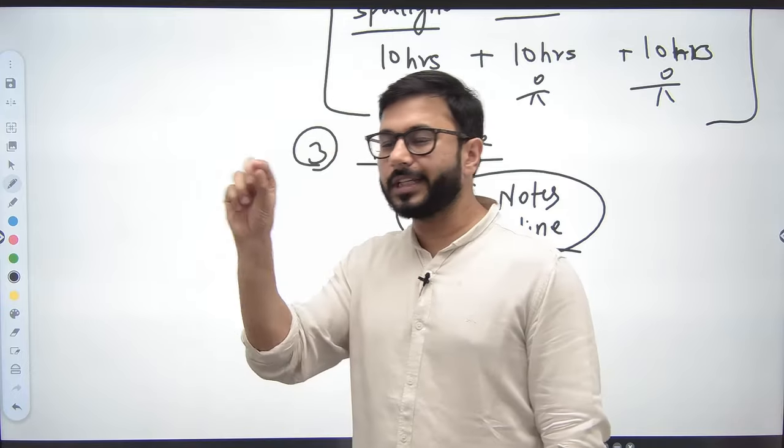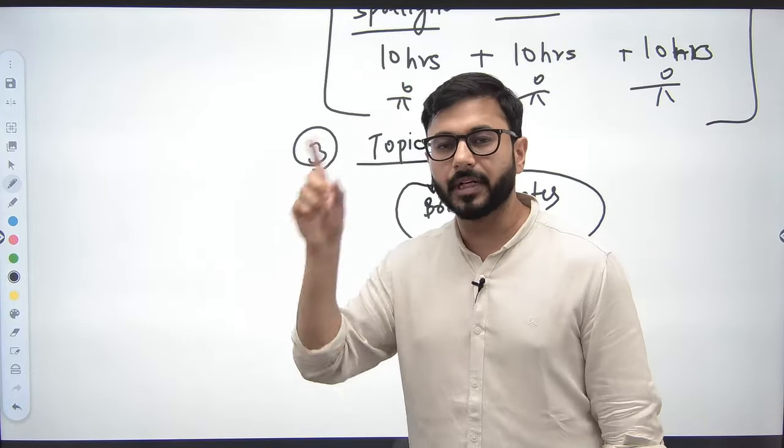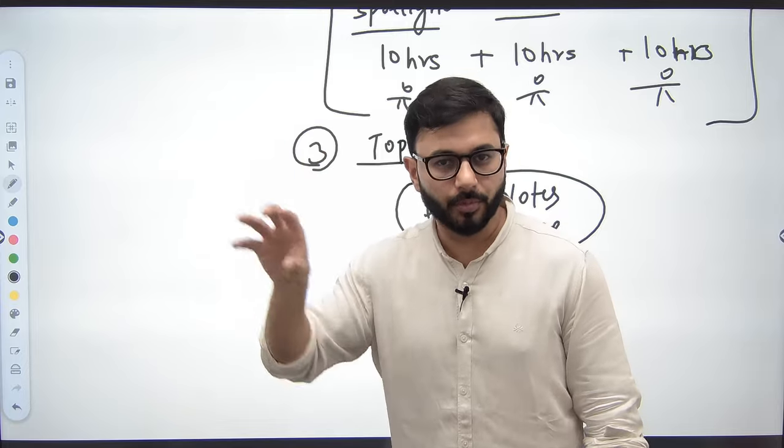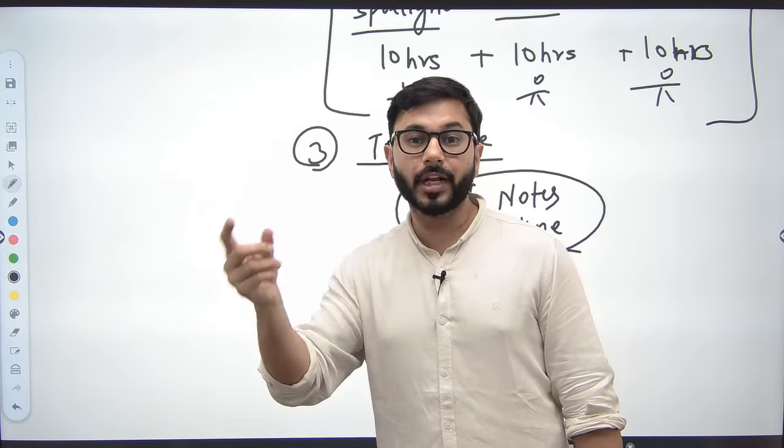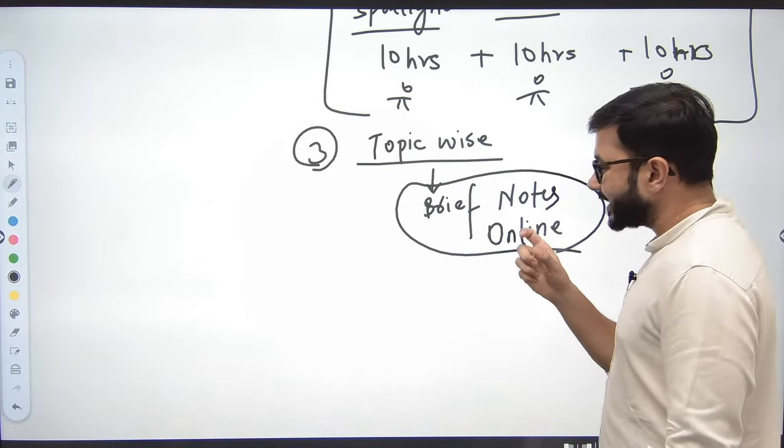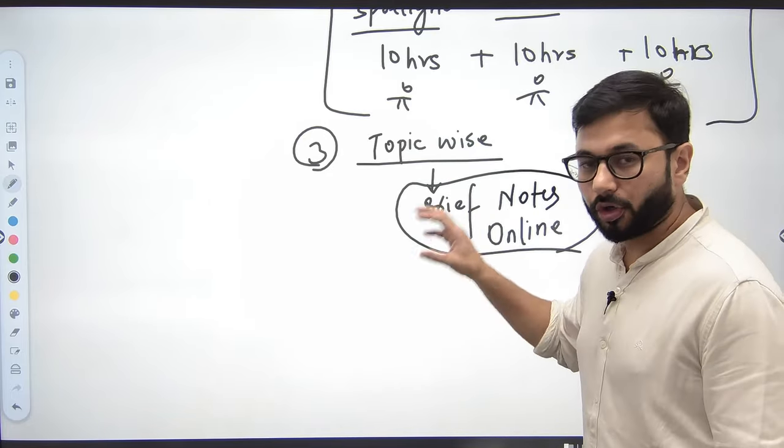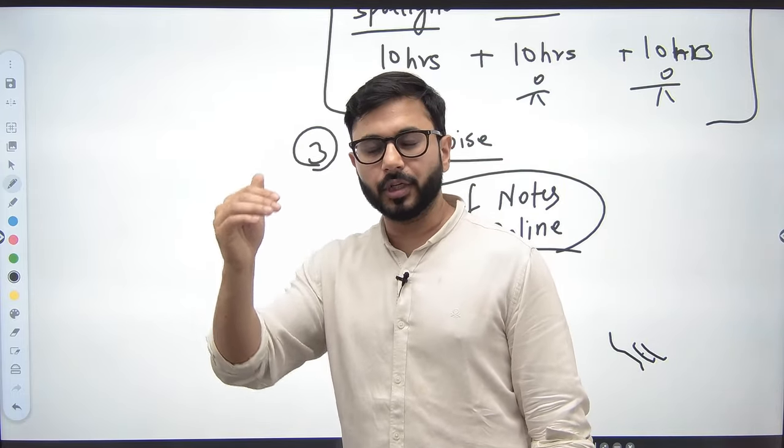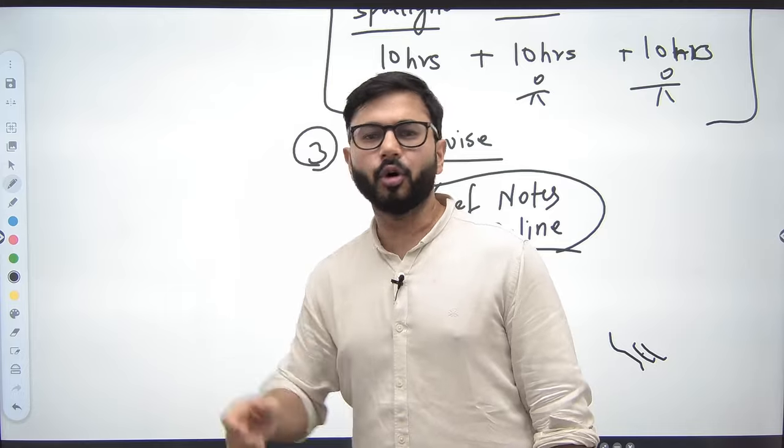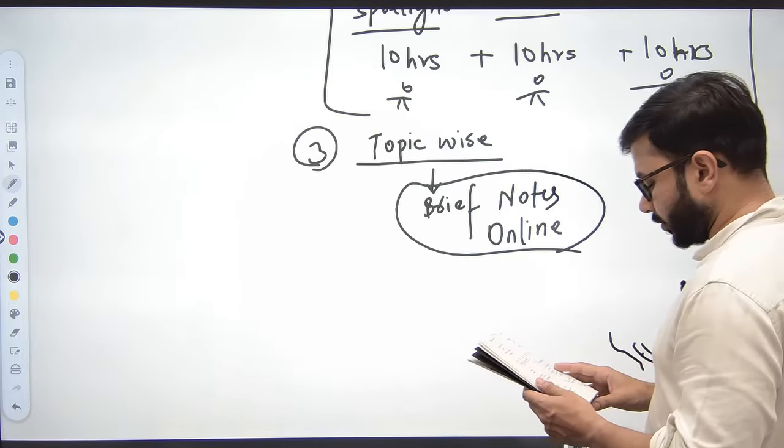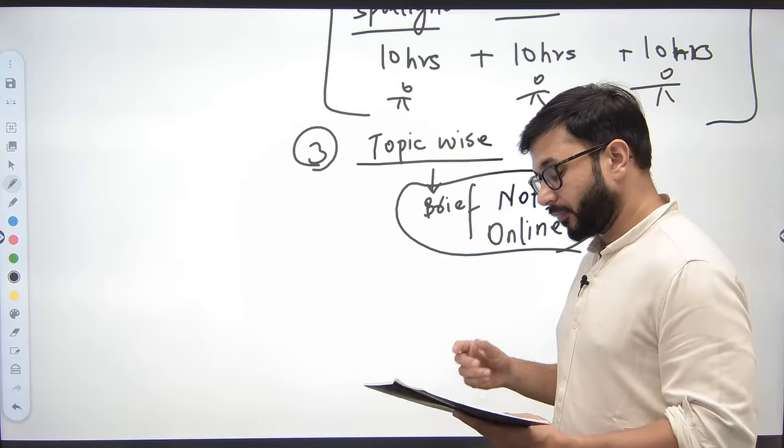Aapko aapne brief notes mein kya likha? Bas liquidity and interest rate, that's it. Jab revise karoge, then you read that point and you're like 'okay, let me try and remember and recall exactly what was the reason, what was the argument that I had read when I was going through the comprehensive notes.' So these are very brief notes that you can make online. You should not be making it offline because these are all in points, so online bahut aasan hota - bullets wagaira bana ke, numbers bana ke bahut jaldi likh sakti. So this is the third one jo mein baat karna chahta tha jiske baare mein. Fourth, mein ne ek aur identify kiya tha: rough notes while reading. Now this is the same like this.